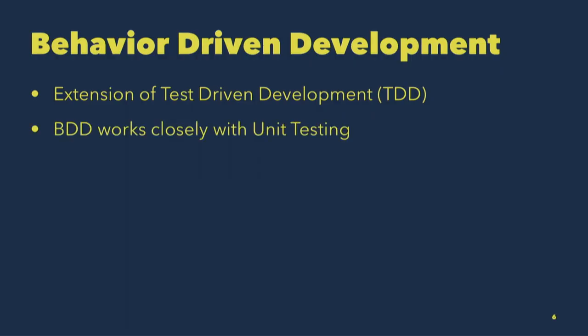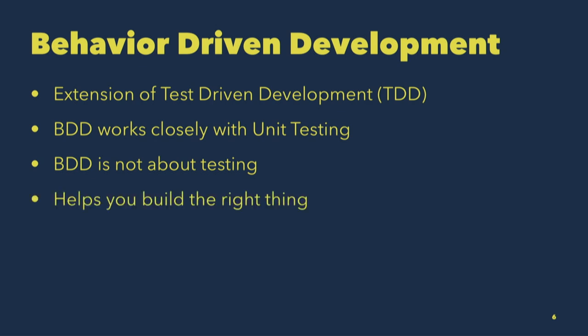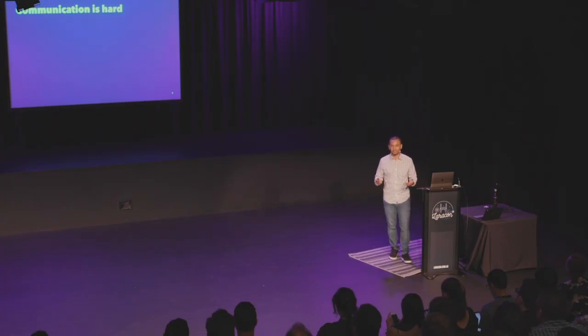I started to learn about user stories and kind of went down that path, and I landed on behavior-driven development. Behavior-driven development is an extension of test-driven development, or TDD. It works really closely with unit testing, but it's not about testing. It's about helping you build the right thing. The idea is that you can build out an entire application with TDD, have a fully tested system, deliver it to the client, and they say 'this isn't really what we wanted.' The bottom line is that communication is difficult, generally speaking, as well as in software, and ambiguities are almost always in those requirements.